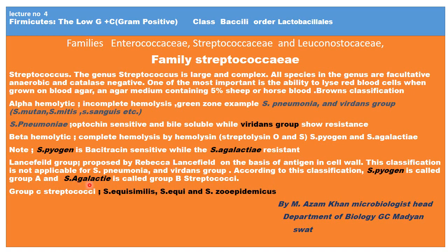According to Lancefield classification, Streptococcus pyogenes is called Group A, and Streptococcus agalactiae is called Group B streptococci, because they possess Group A and Group B antigens respectively. There are also Group C and Group D bacteria. Group C streptococci include Streptococcus equisimilis, Streptococcus equi, Streptococcus zooepidemicus, and others.